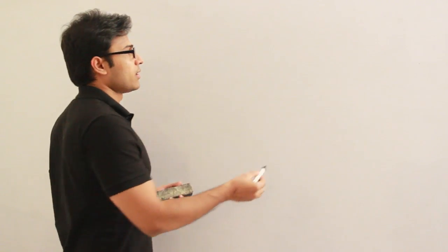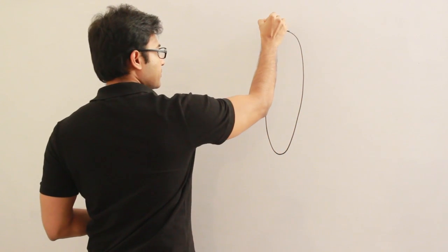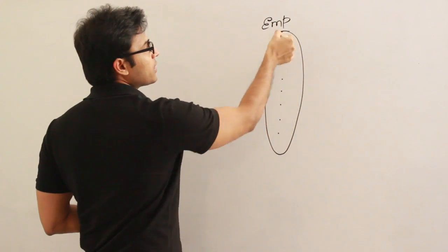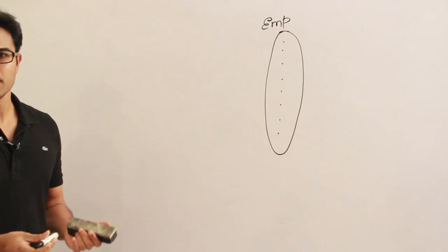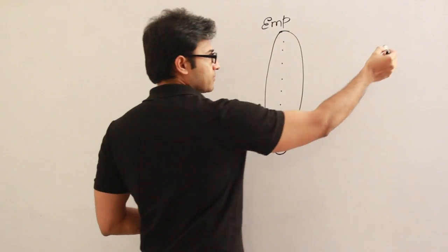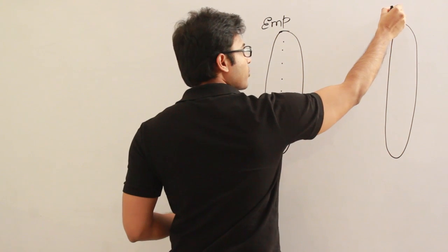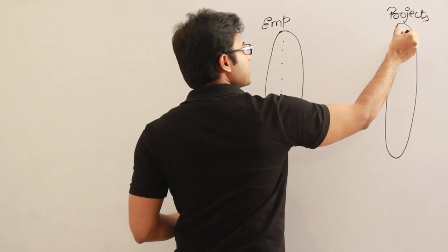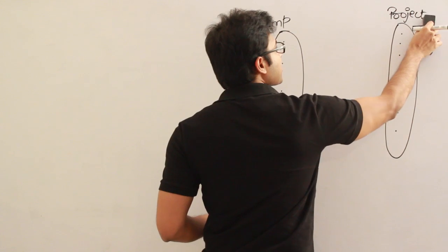Let's see one other type of relationship between two entities. We again have the same employee entity type — this is the employee entity set, and this set contains all the entities related to employees, where each element refers to one employee. There is one more entity set, and the entity type is project, and this contains all the entities, where each entity represents a project.